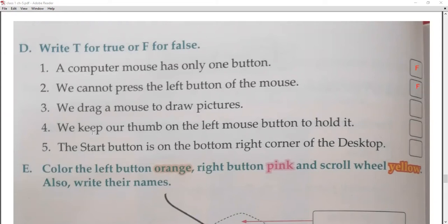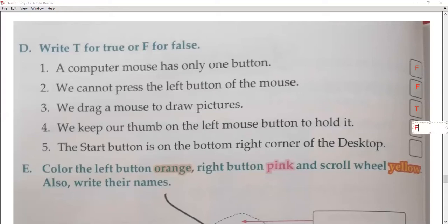Number three: we drag a mouse to draw pictures — that is true. Number four: we keep our thumb on the left mouse button to hold it. Do we use thumbs? No. Which finger do we use? The first finger. So this one is false.